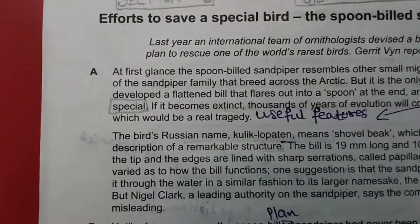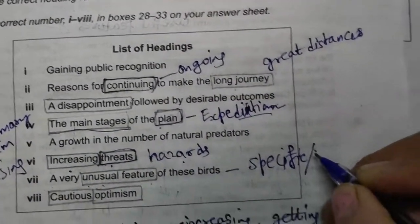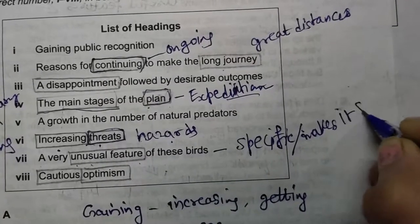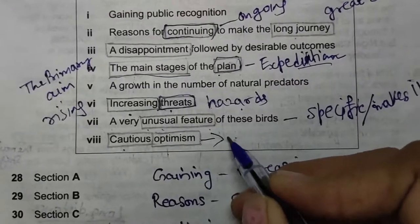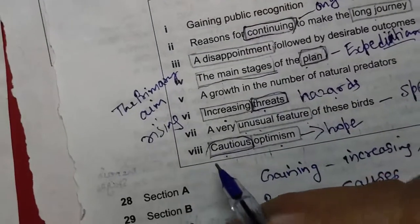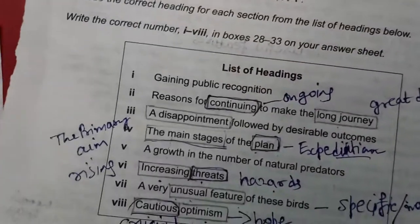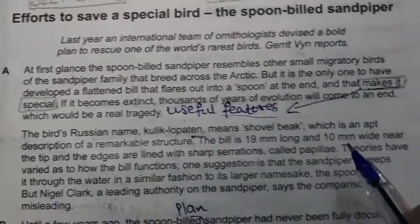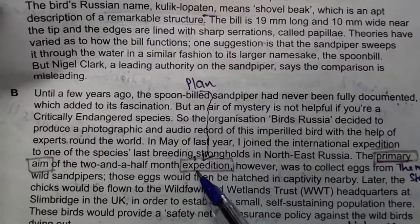Rising hazards. For 'unusual features,' the writer has used 'specific features' or 'makes it special' — the writer used 'makes it special' instead of 'unusual features.' For 'cautious optimism,' for 'optimism' it is given 'hope.' For 'cautious,' it is given 'crucial' in the paragraph. Let's look at the locations of these words — for unusual features it is 'makes it special.'